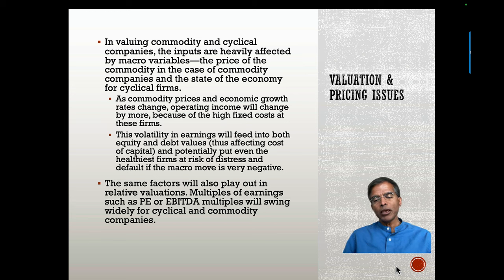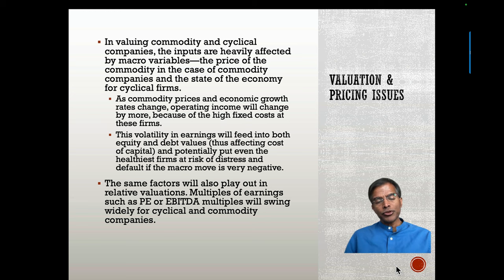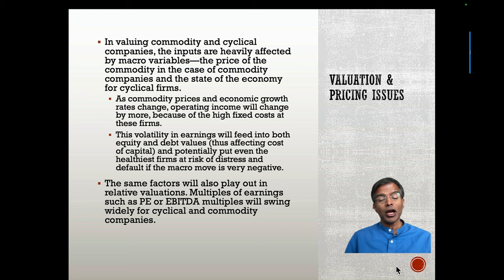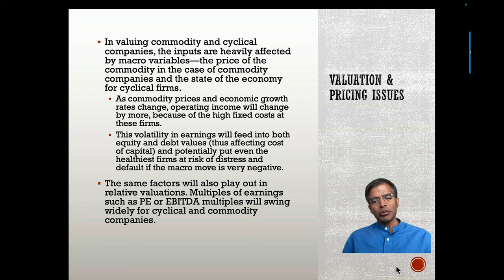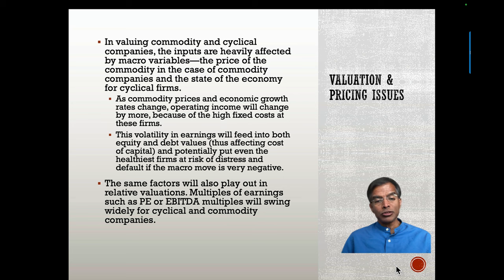Here are some specific issues. When you value or price a commodity or cyclical company and use the most recent year's numbers — which is what we're trained to do in much of evaluation — those recent year numbers are going to be heavily affected by commodity price changes and economic growth during that period. In other words, earnings can be really high or really low, not because of what the company did, but because of macro forces. And the volatility in earnings numbers and book value numbers caused by the commodity price or cyclicality will affect your equity and debt values.